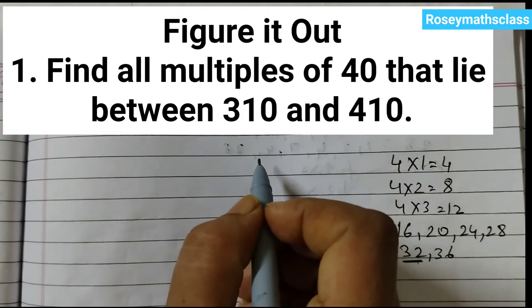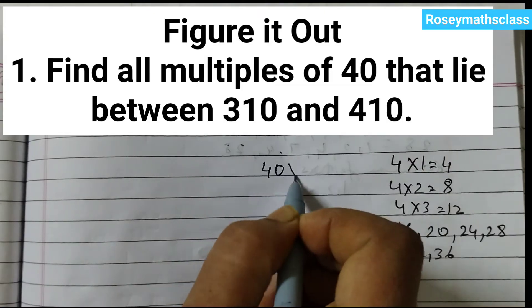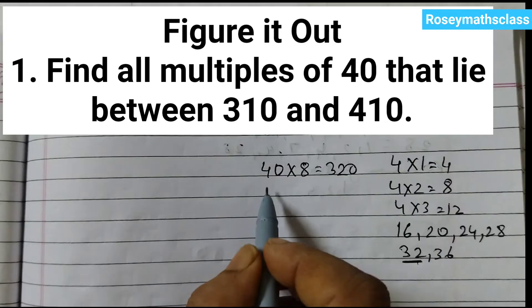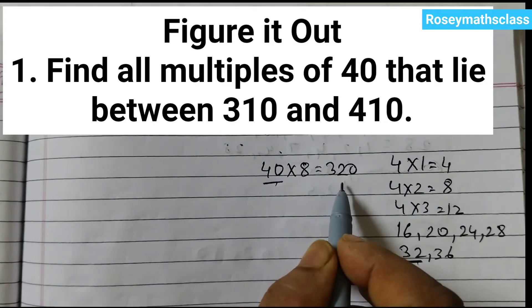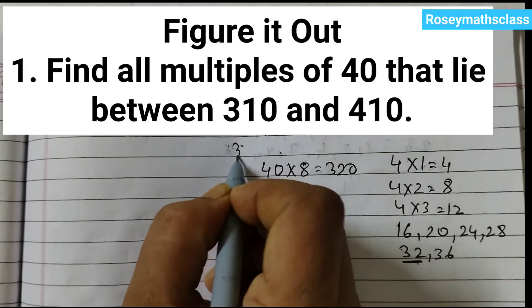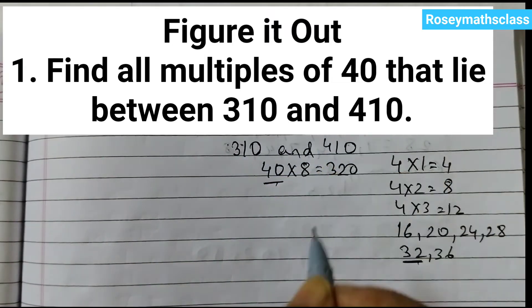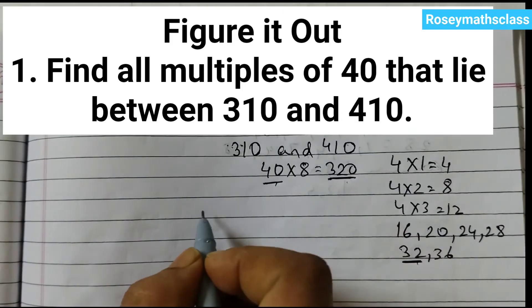40 into 8 is 320. We need to find all the multiples between 310 and 410. The smallest multiple would be 320.